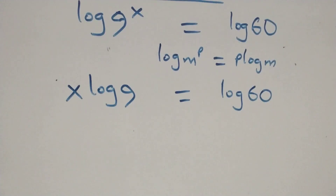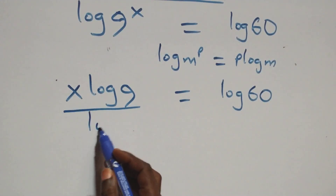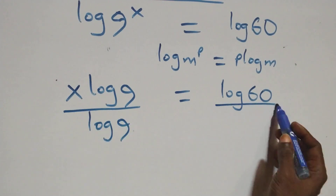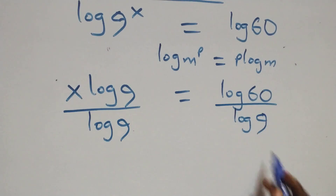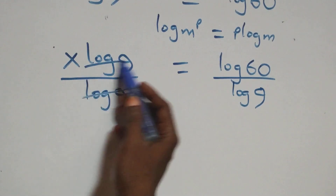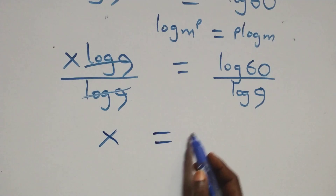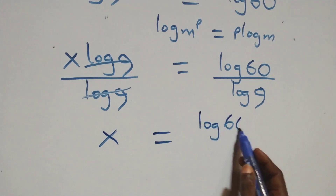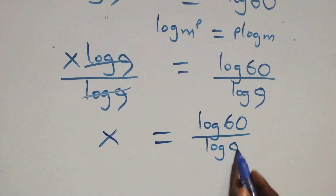The next step: we divide both sides by log 9. Dividing both sides by log 9, the log 9 terms cancel each other, giving us x equals to log 60 over log 9.